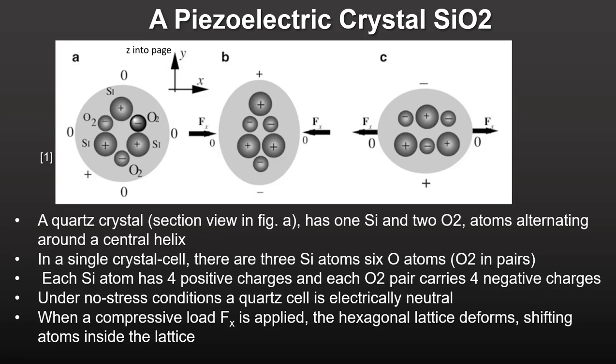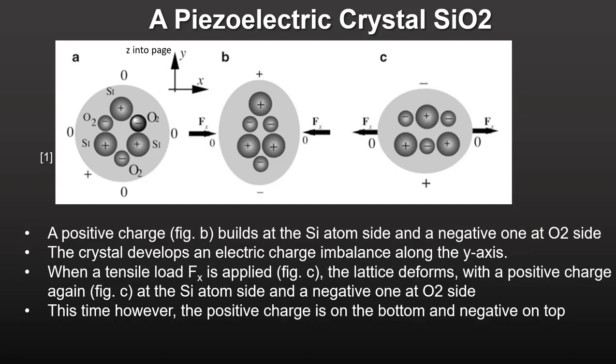When an external compressive load is applied, however, the lattice deforms, shifting atoms inside. The positive silicon ion is pushed to the top and the negative oxygen ion is pushed to the bottom, giving you an electric charge imbalance along the y-axis. When a tensile load is applied, you also get an electric imbalance along the y-axis, but in the opposite direction.